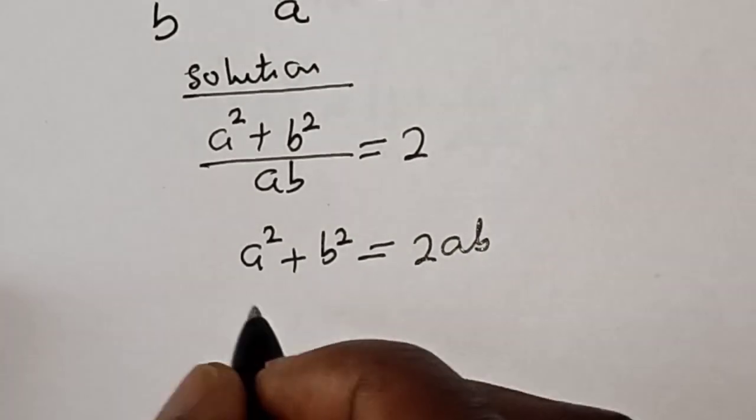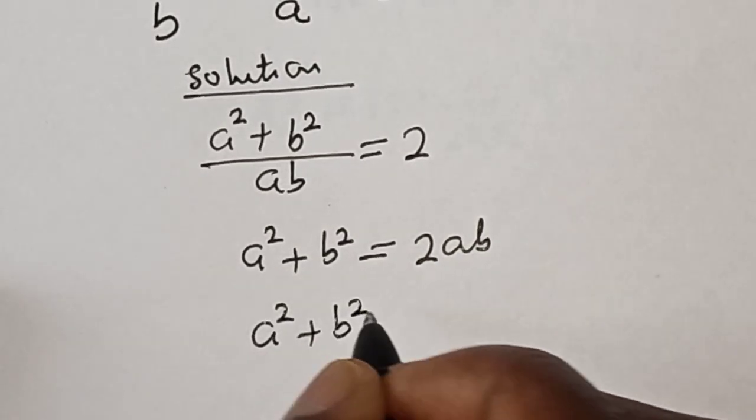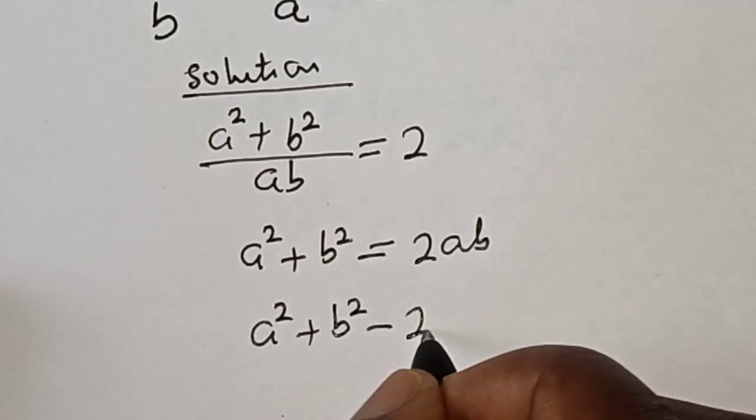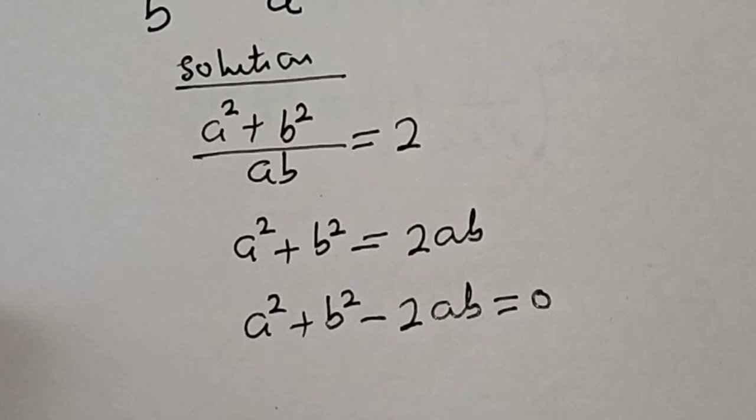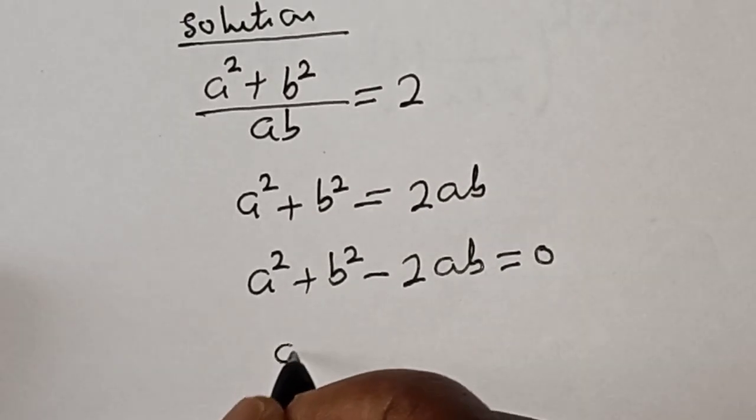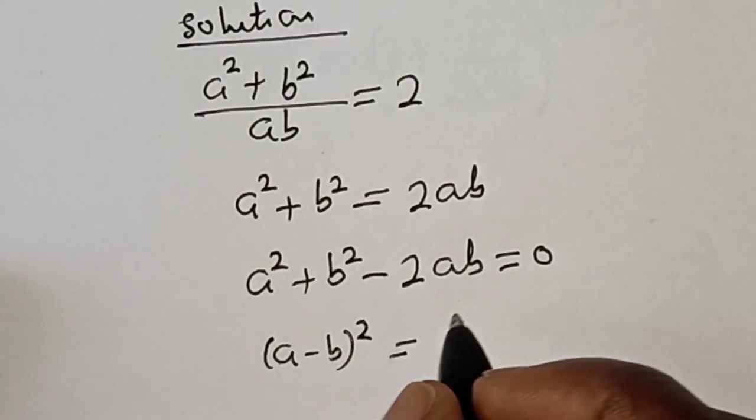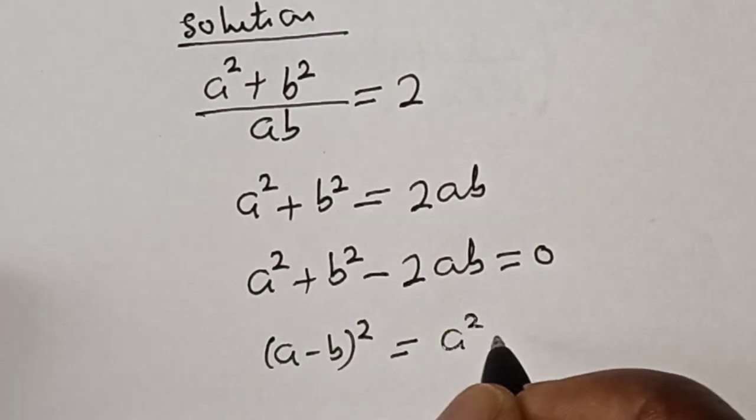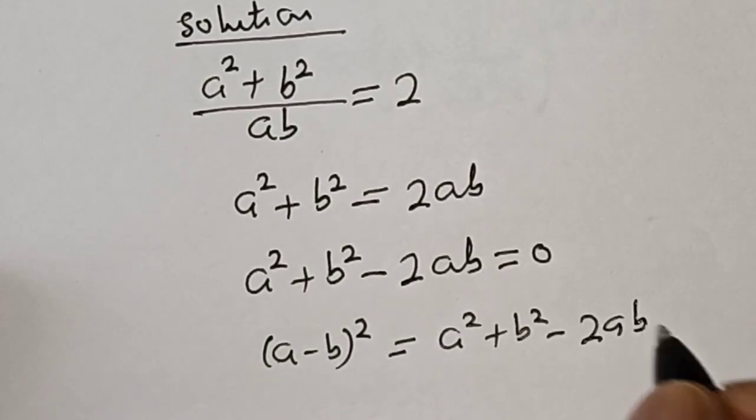But then we have a squared plus b squared minus 2ab is equal to 0. Remember this rule that a minus b squared is equal to a squared plus b squared minus 2ab.